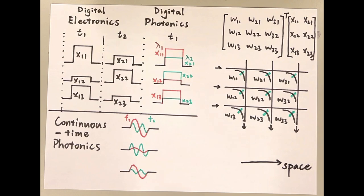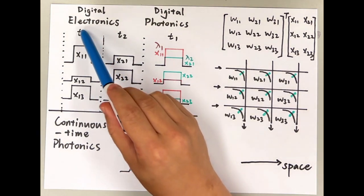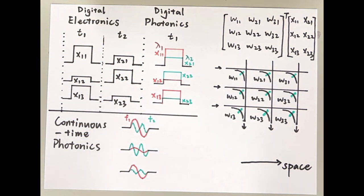At time t1, you send one vector, and at the next time t2, you send the second vector.